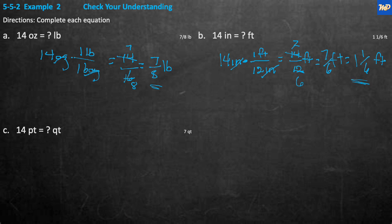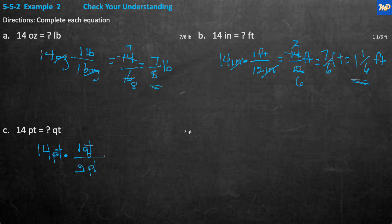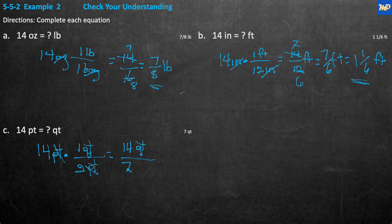Next, 14 pints to quarts. We write 14 pints and multiply by 1 quart over 2 pints — since there are 2 pints in a quart. The pints cancel, and we have 14 times 1 divided by 2. That equals 7 quarts.